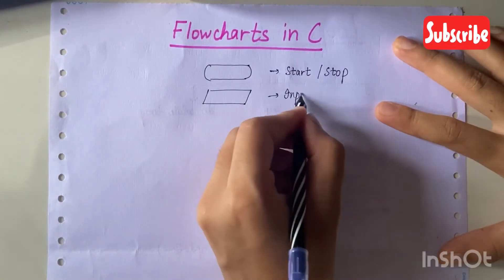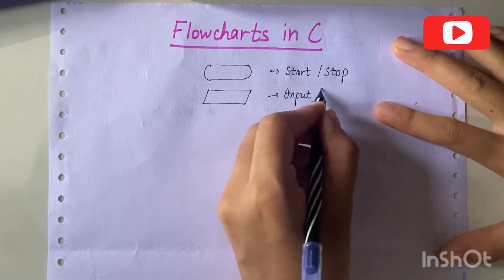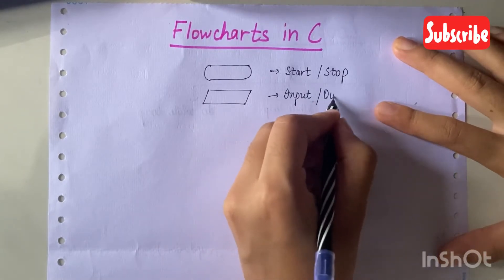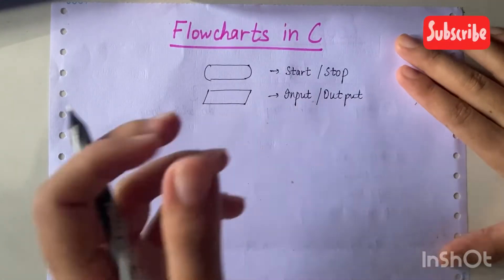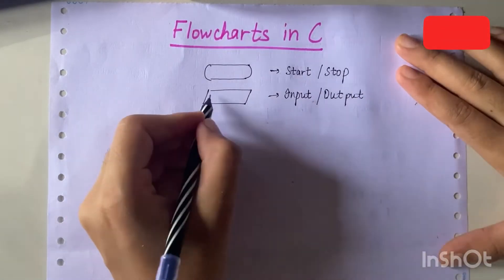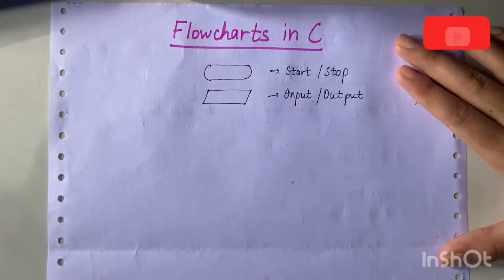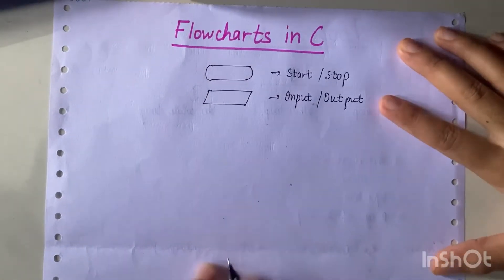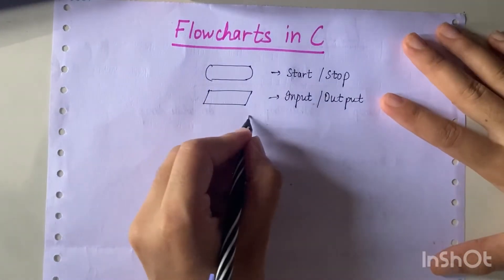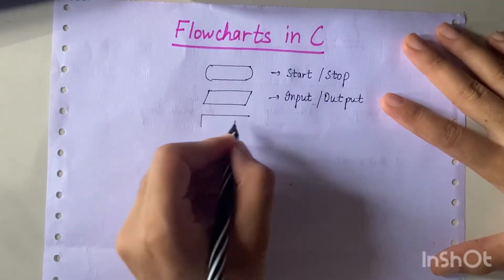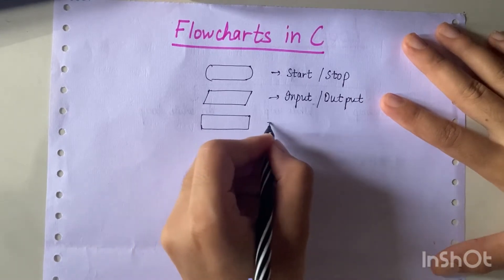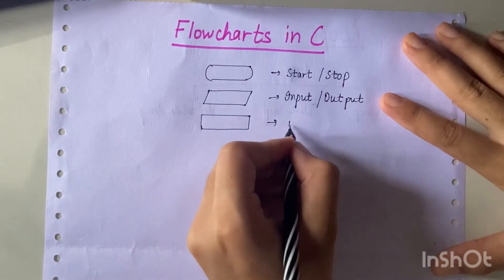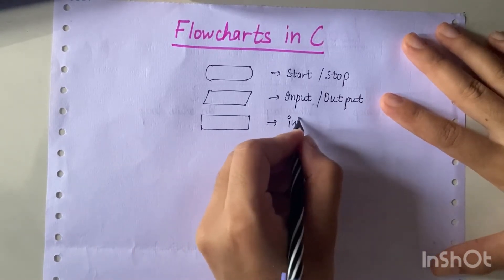Then we use a parallelogram for input and output. If we need to input a number or we have to print something for output, we use a parallelogram. Then we use a rectangle for initialization — if we have to initialize something, we use a rectangular box.